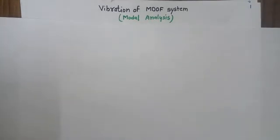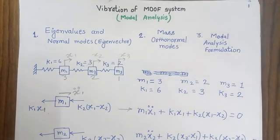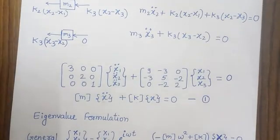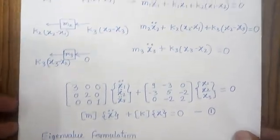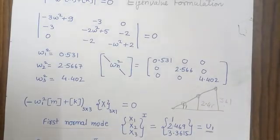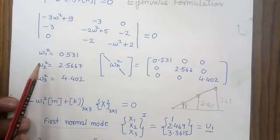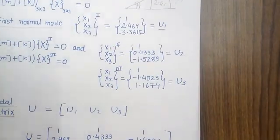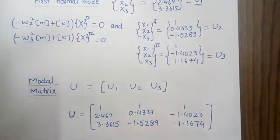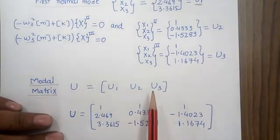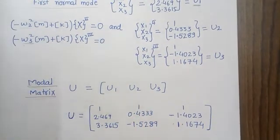Welcome again to the session on vibration of multi-degree of freedom systems. We were studying modal analysis, and in the first part we considered a problem of three masses connected with three springs. We developed the governing equations of motion, converted them into matrix form, developed the eigenvalue problem, calculated three natural frequencies, and then calculated three natural modes or normal modes u1, u2, and u3. We merged the three normal modes into a single matrix known as the modal matrix.